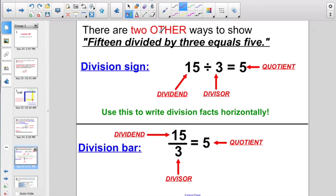But there's two other ways to show 15 divided by 3 equals 5. You could use a division sign, in which case 15 would be first, the division sign, then the divisor of 3 equals the quotient of 5. This is the way I want you to use it when you have to write division facts horizontally. Write them out horizontally using a division sign.